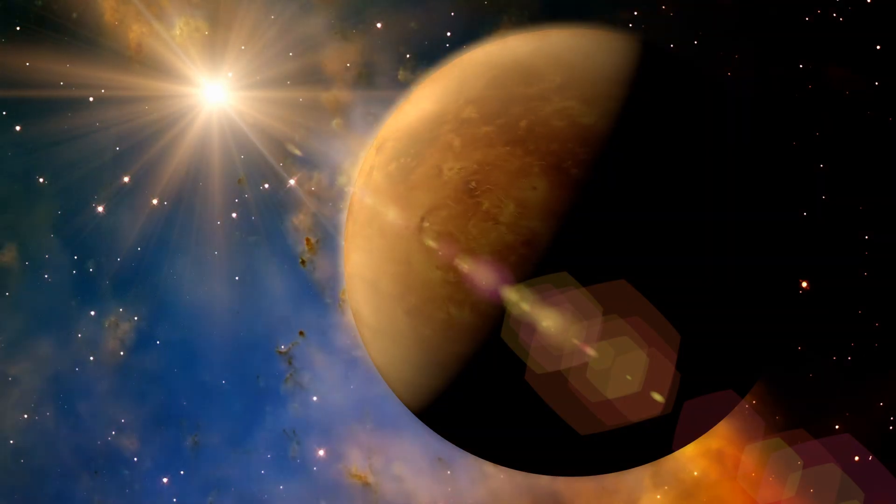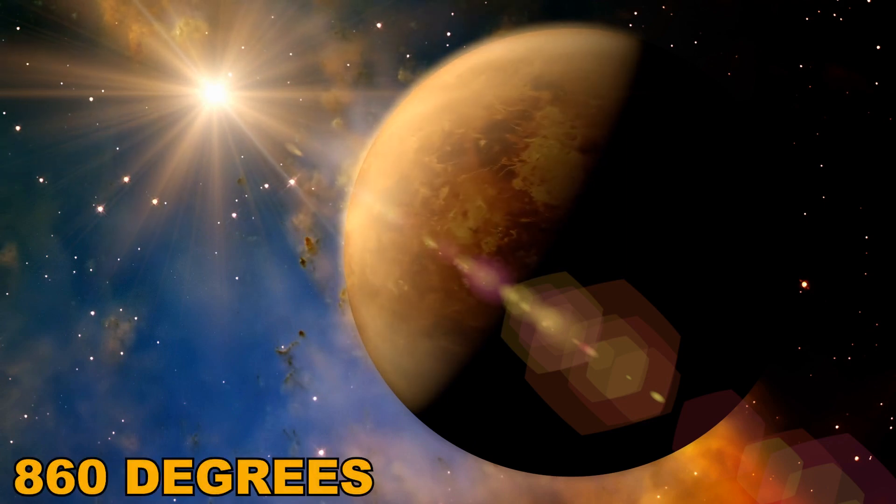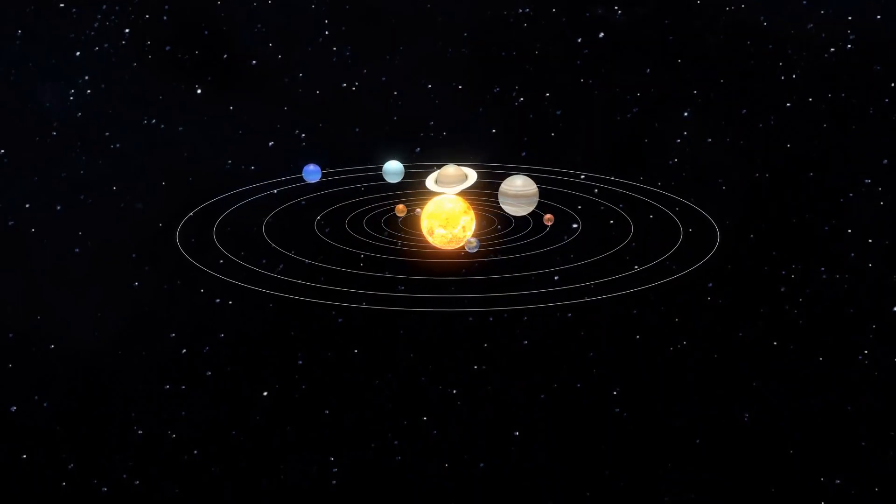Now imagine getting closer to the Sun, like taking a trip to Venus. Venus can reach insane temperatures of 860 degrees. It's not only about the distance, though.